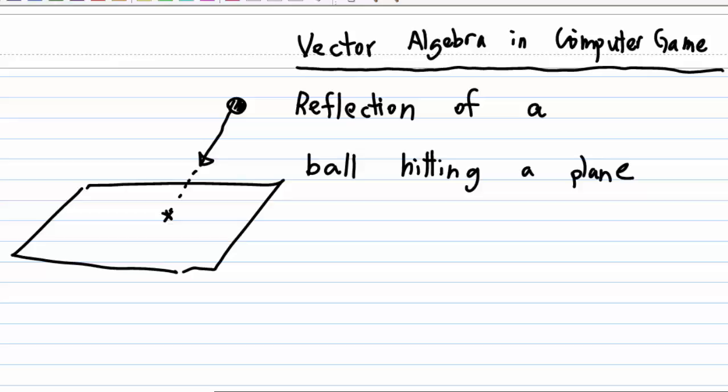So in this diagram, we have a plane and a ball is approaching the plane. How do we find the reflection of this ball when it hits the plane?